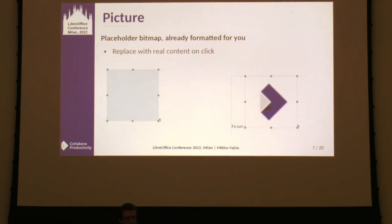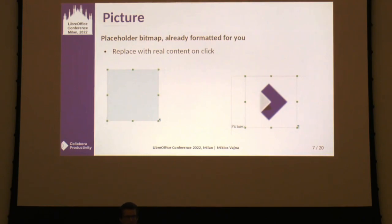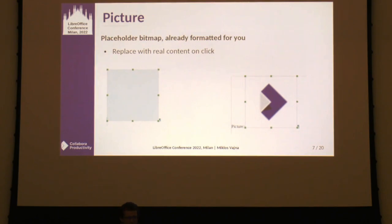The next type is picture content control. Imagine preparing a CV template with a position where you want a picture for the applicant. You can pre-format the image — decide where it will be inserted, the size, specify a nice-looking border — and mark it as a placeholder picture. When you click on it or press paste, the normal insert-image picker shows up and you can replace the placeholder with an actual image, retaining the original formatting. The focus is on a skilled user doing all the tricky formatting, while the end user just needs to insert the image.